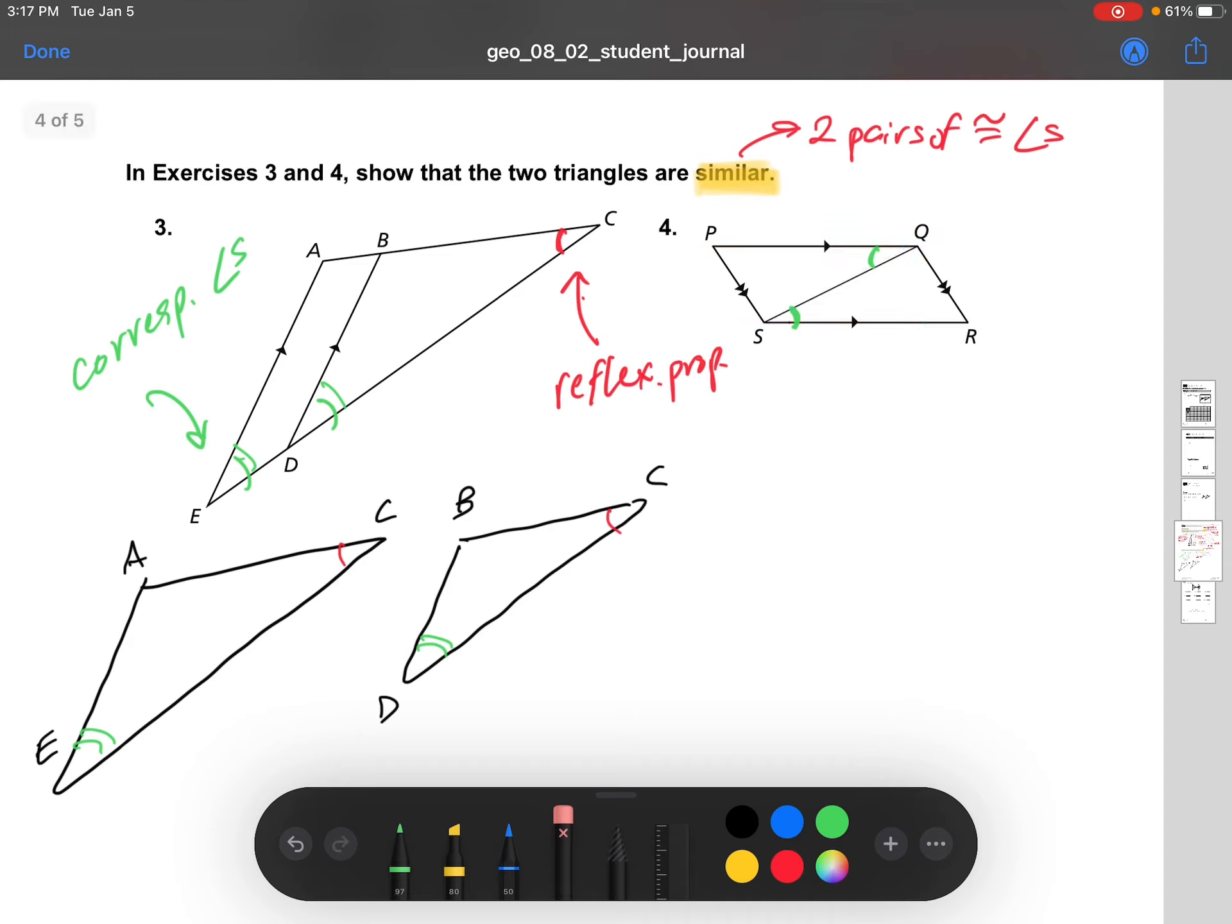Let's look at the other set of parallel lines. So PS and QR are parallel lines and we have, again, a transversal through them. And so we get another set of alternate interior angles right here. From the other set of parallel lines.